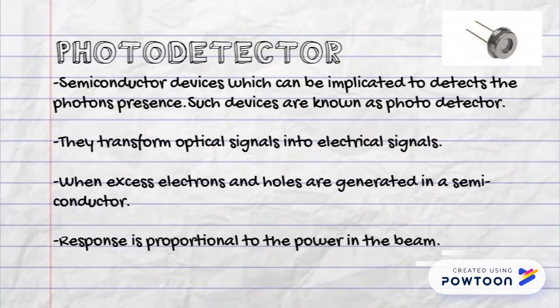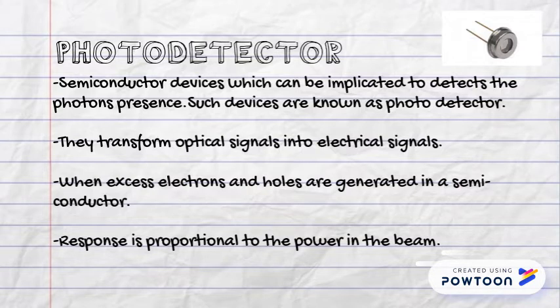Photodetector: semiconductor devices which can be used to detect the presence of photons. Such devices are known as photodetectors. They transform optical signals into electrical signals. When excess electrons and holes are generated in a semiconductor, the response is proportional to the power in the beam.